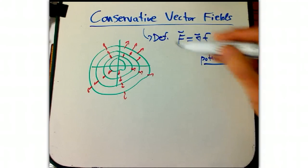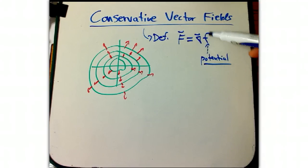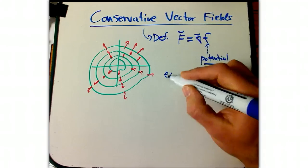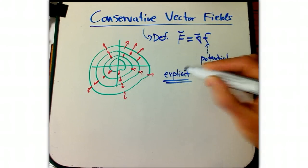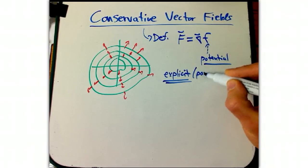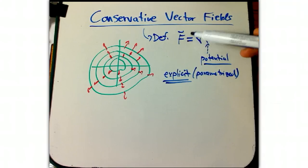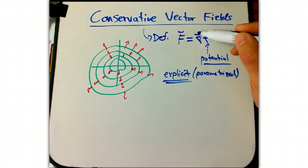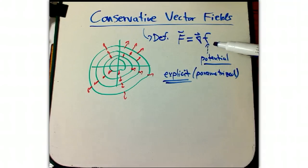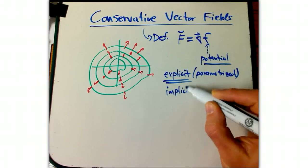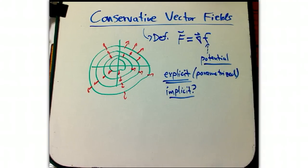So this is a nice definition in one way because it's very explicit and it creates a lot of examples. It's essentially, in this explicit-implicit dichotomy I always use, an explicit sort of parameterized definition. It's a great way to create conservative vector fields. It's not a great way to take a random vector field and detect if it's conservative. So one of the goals is to find an implicit characterization, and it's a very fundamental concept.